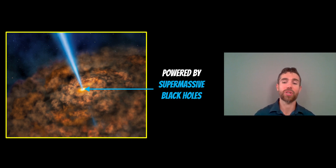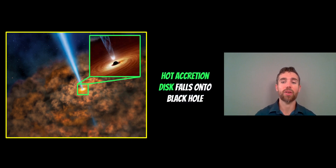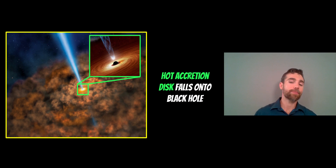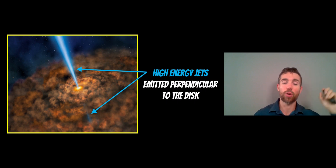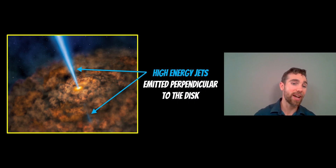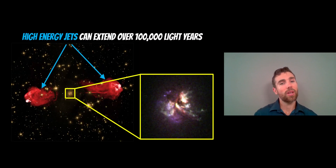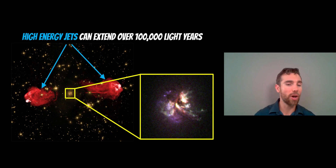There are supermassive black holes in the centre with a hot accretion disk orbiting around them — matter basically orbiting the black hole and falling onto it. You also have very high energy jets emitted perpendicular to the disk. These are the high energy jets we saw in that Hubble telescope image, perpendicular to the disk, and that is where most of the energy we see from these quasars comes from.